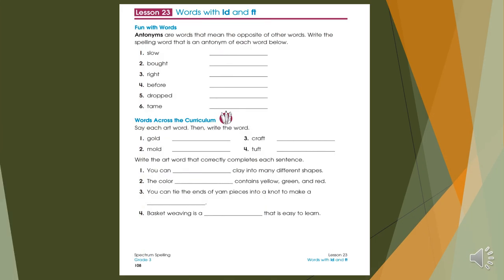On page 108, there is another exercise. The first one is antonyms are words that mean the opposite of the other word. Write the spelling word. There is an antonym of each word below. What is the antonym of slow? You should find the opposite of slow. For example, fast. Or maybe you have to use the words that you have on the previous pages. Swift. And try to do the rest of them by yourself.